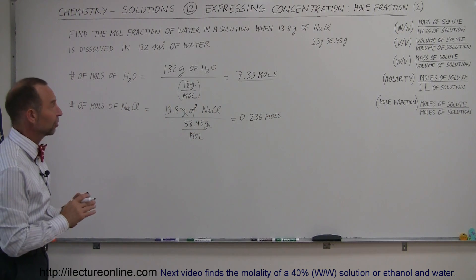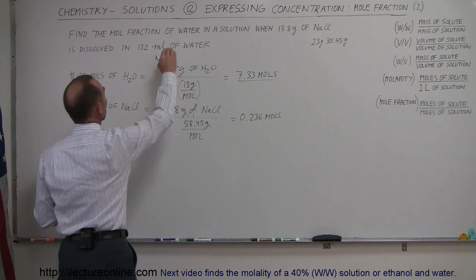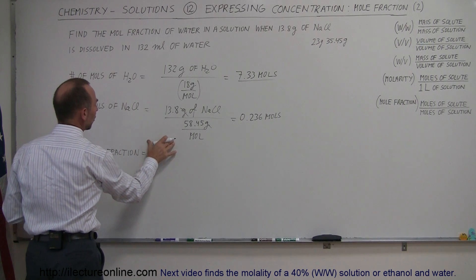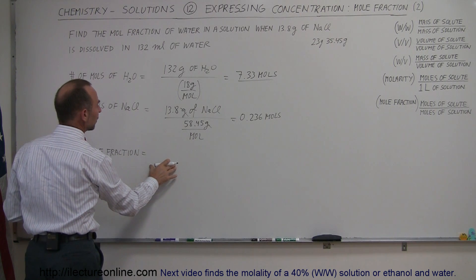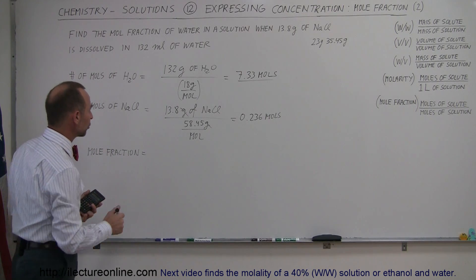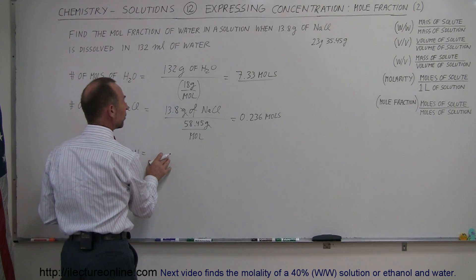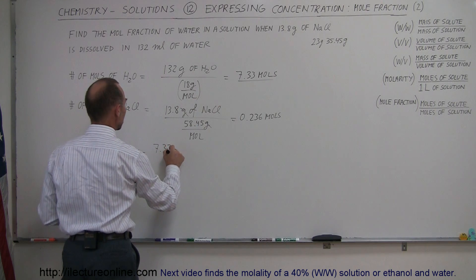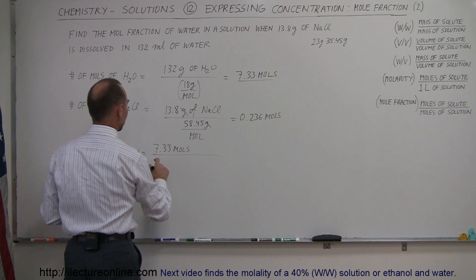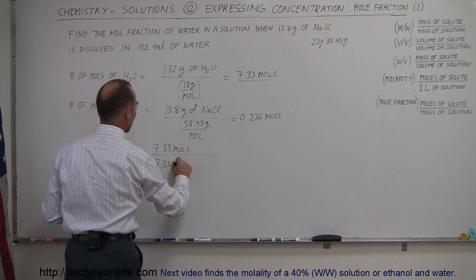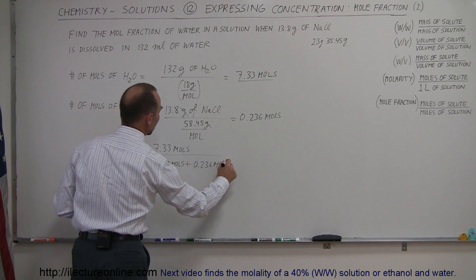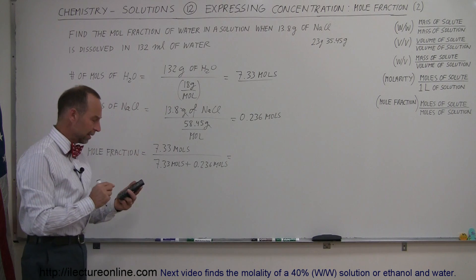Now we're ready to find the mole fraction. We're finding the mole fraction of water, so therefore the mole fraction is equal to the number of moles of the water divided by the number of moles of the solution, which is the sum of all the moles of the solvent and the solute combined. So that would be the number of moles of water, which is 7.33 moles, divided by the sum of the two, 7.33 moles plus 0.236 moles.